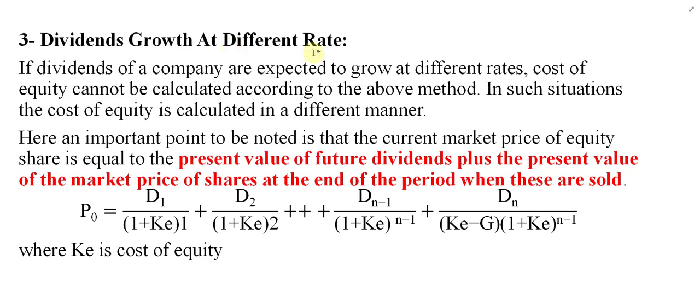So how can we find out the cost of equity? This method is based on the time value of money. We use the time value of money in order to calculate the cost of equity. If you remember from financial management how to calculate the value of a share, the value of a preference share, or the value of debt — we used time value of money. The same applies here: to find out the cost of equity we use the present value formula.